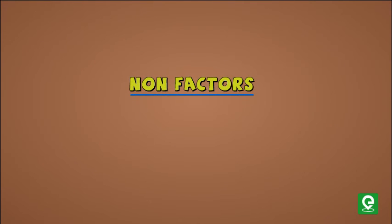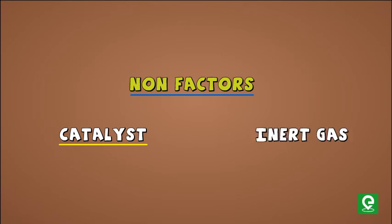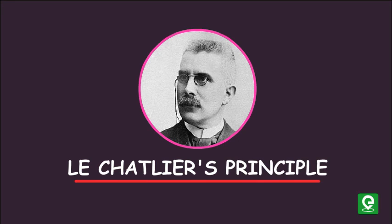There are certain non-factors which, if introduced in a system at equilibrium, have no impact on equilibrium. Catalysts have no impact on equilibrium because they impact both forward as well as backward reactions equally. Similarly, inert gases also have no impact on equilibrium. That's all you need to know about chemical equilibrium.